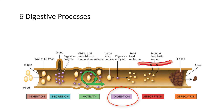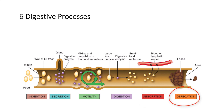In the stomach, for example, we have chemical digestion due to the release of pepsinogen and hydrochloric acid, as well as mechanical digestion when the stomach contracts and relaxes to help break food down. Absorption primarily happens in the small intestine, although some happens in the stomach and the large intestine. Defecation is the release of feces from the body and the elimination of waste products.